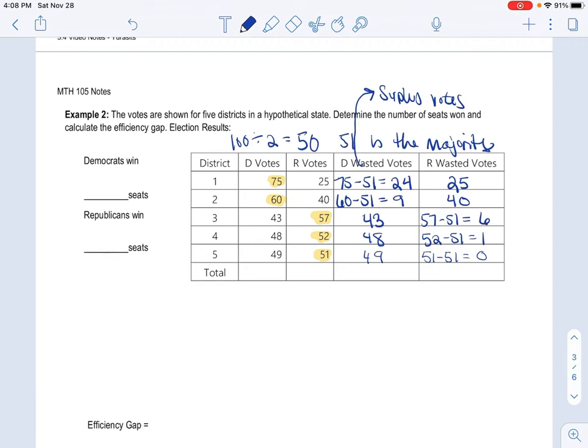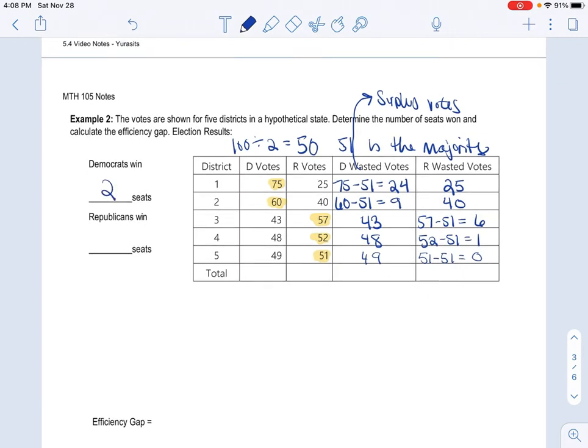So what we can see here is the Democrats win two seats, right? Because they won two districts, and the Republicans win three seats. Now, let's see what the efficiency gap is.